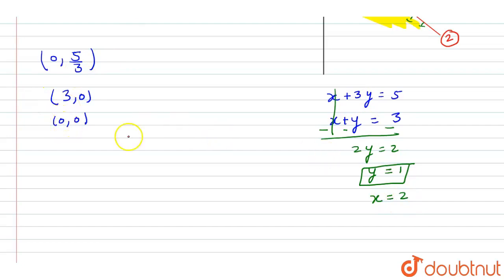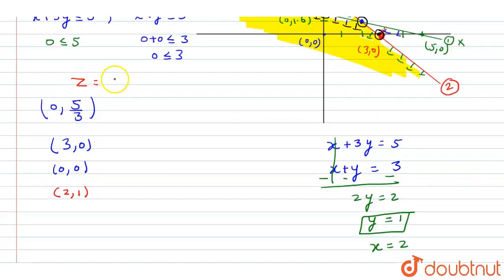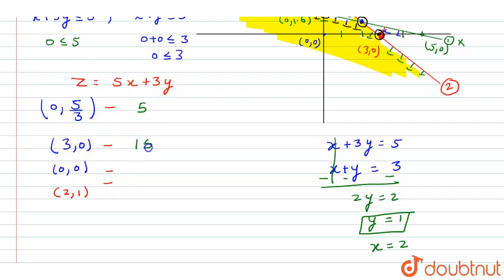Now we evaluate z equals 5x plus 3y at each corner point. At (0, 5/3): z equals 5. At (3, 0): z equals 15. At (0, 0): z equals 0. At (2, 1): z equals 13. The maximum value is 15, which occurs at (3, 0).